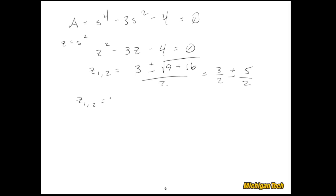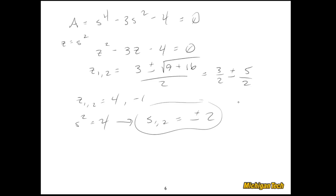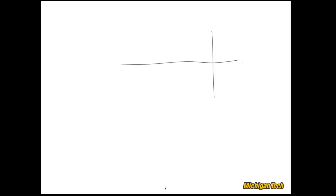From z₁ = 4, we get s² = 4, so s₁,₂ = ±2. We can now see the pole in the right half plane — it is the s = +2 pole, and we know its exact value. From z₂ = -1, we get s² = -1, so s₃,₄ = ±j. So from the auxiliary equation we know poles at ±2 and ±j.